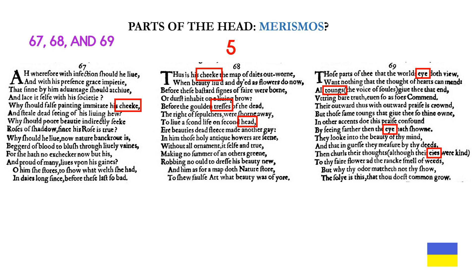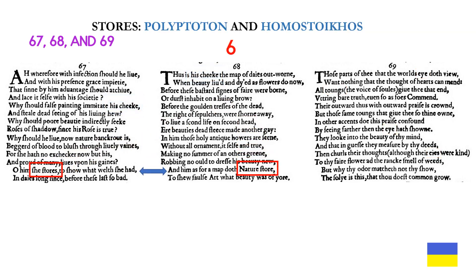The reason I ask if this is a true example of merismos: where are the ears? They're not there. His cheek appears in sonnets 67 and 68. And stores — the word stores — is another example of polyptoton and homo stoikos. We have six different connections here between these poems, so they must be read in this order.